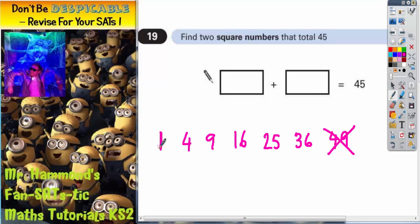Well, 1 is going to be too small. You can't add 1 to any of these to make 45, so that's too small. You can't add 4 to any of these, so that's also too small. So, we haven't actually got many options left. So, it's going to be any 2 of these numbers here.